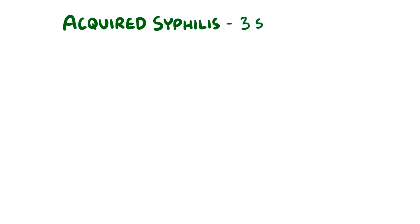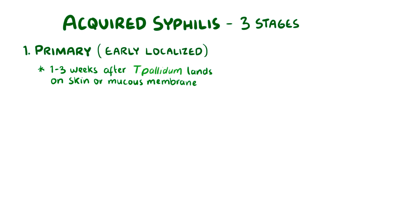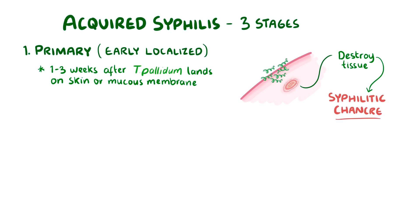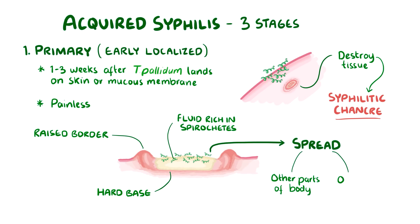In acquired syphilis, there are three stages to the infection. The first stage is called primary syphilis, or the early localized stage, and it usually starts one to three weeks after T. pallidum lands on the skin or mucous membrane. During this stage, the spirochetes destroy the soft tissue and skin wherever they enter the body, resulting in the formation of ulcers called syphilitic chancres. A syphilitic chancre is painless — you can remember that by dropping in a U to make it 'chancure,' like you're cured of the pain. These chancres have a hard base, raised borders, and are usually covered by a fluid rich in spirochetes, which can spread to other parts of the body as well as to other individuals.